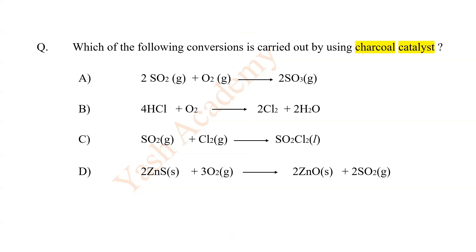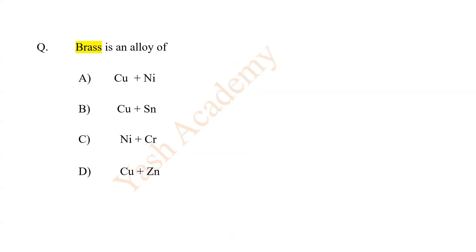Which of the following conversions is carried out by using charcoal catalyst? C. Brass is an alloy of D. Copper and Zinc.